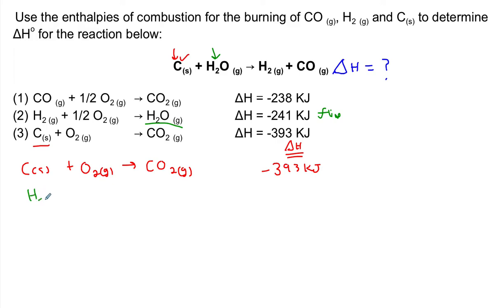So I'm going to start with water vapor as my reactant. This flipped equation is going to produce hydrogen gas and half a unit of oxygen gas. Now, I prefer to write the half as 0.5 in decimal form. I find students are better at mental math using decimals. So the enthalpy change has to go from negative to positive 241 kilojoules.